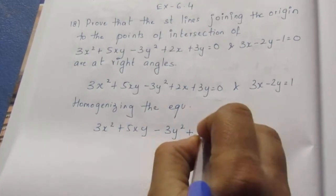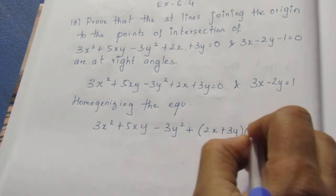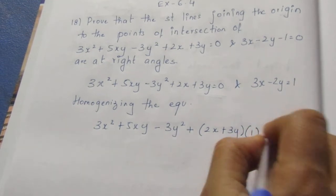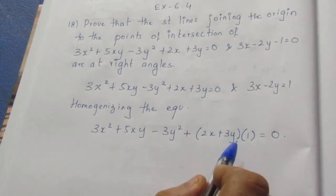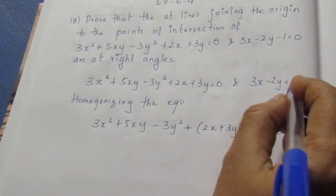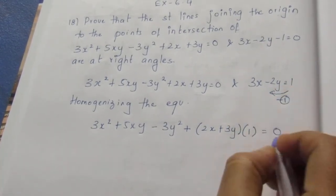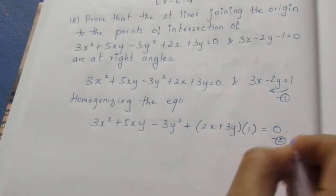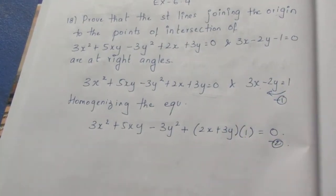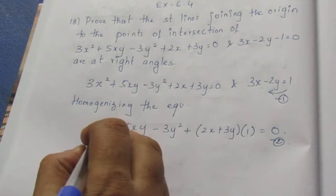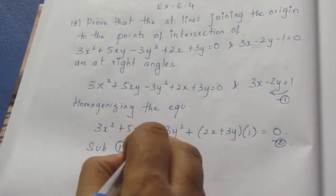Now we do the substitution. We know that 3x − 2y = 1, so we can write 1 = (3x − 2y). We substitute this value — substituting 1 into the linear terms of the first equation.